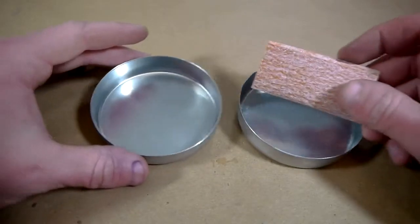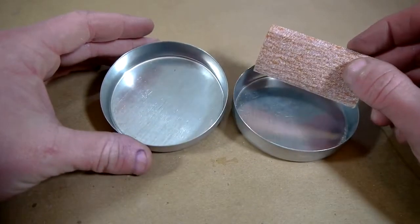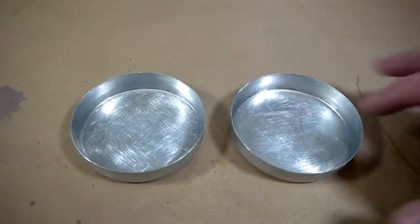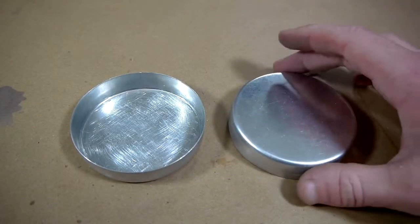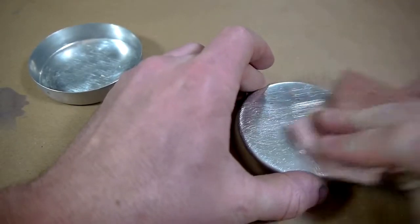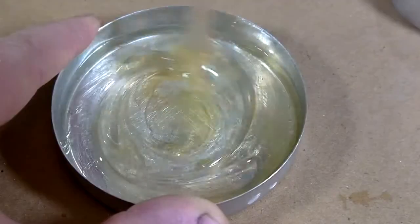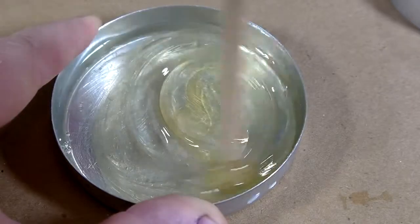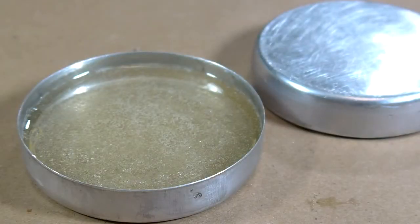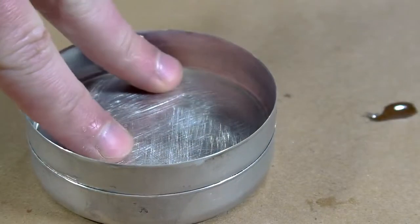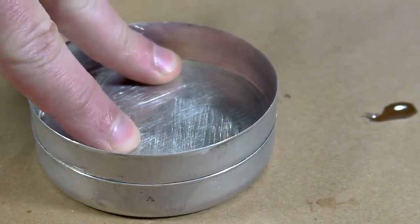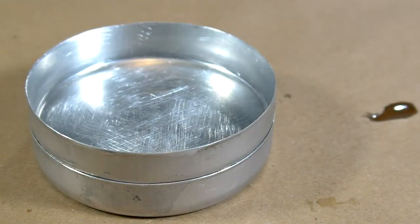With the edges of both caps filed smooth, the inside of each is given a rough surface with a piece of sandpaper as well as the bottom side of one of them. The cap that has only been roughed up on the inside is now filled with epoxy and the second cap is pressed into it. There should be enough epoxy between them that any air is forced out. After about 20 minutes, the piston should be holding itself together.